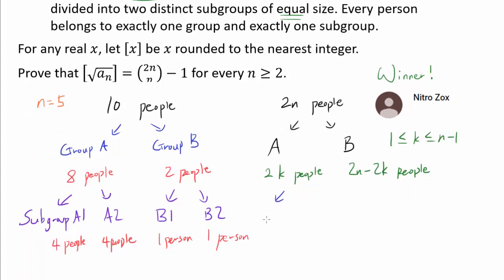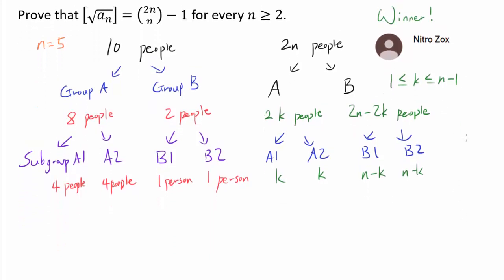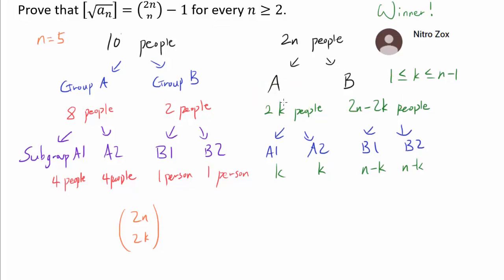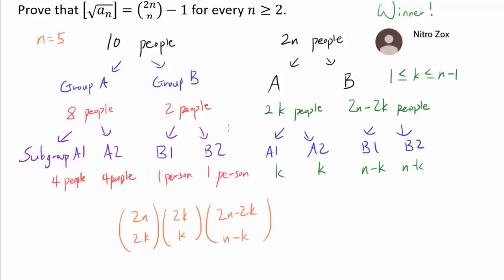After this, we further divide each group: subgroups A1 and A2 each get k people, and B1 and B2 each get n-k people. So in how many ways can this process be followed? We start by selecting 2k people from 2n people for group A — that's C(2n, 2k). Then we pick k people out of 2k for A1, giving C(2k, k). Then we choose n-k people from 2n-2k for B1, giving C(2n-2k, n-k). Since k ranges from 1 to n-1, we sum this expression, and this entire sum is a_n.